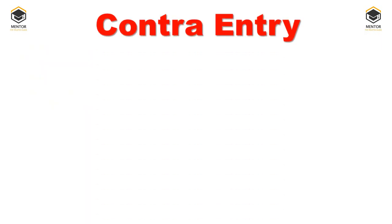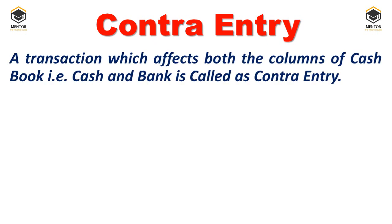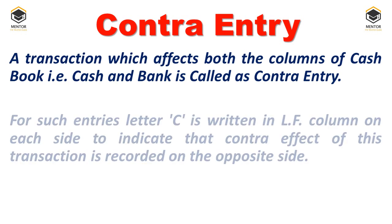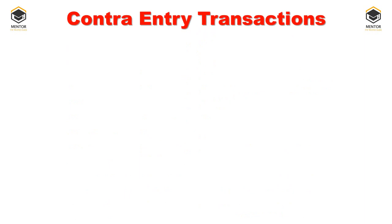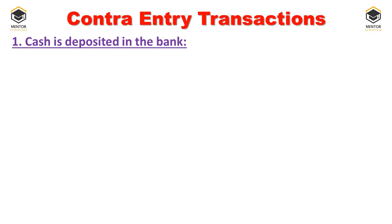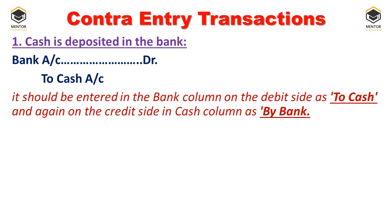When you come to the contra entry, it is very significant and important. A contra entry is a transaction that affects both the cash column and the bank column of the cash book. For such entries, the letter 'C' is written in the LF column on each side to indicate the contra effect is recorded on the opposite side. The first contra entry transaction is cash deposited into the bank. The journal entry is: bank account debit to cash account. When cash is deposited in the bank, bank balance increases and cash balance decreases.